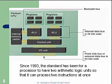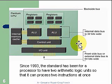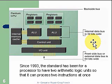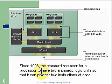Here's a diagram of a CPU. You can see the memory cache connected to what we call the backside bus. There are two sets of registers and two sets of ALUs. The internal data bus size is 32 bits on this particular processor, though today we mostly see 64. The frontside bus, which connects the CPU to the rest of the computer, has been 64 bits wide for quite a long time. Since 1983, the standard has been for a processor to have two arithmetic logic units so that it can process two instructions at once.